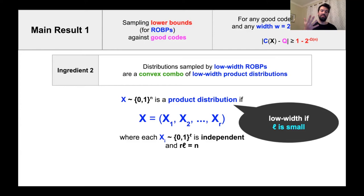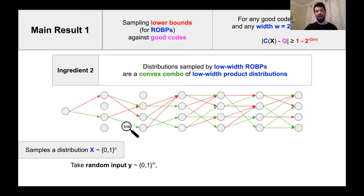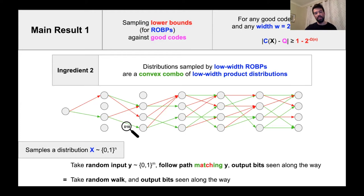Let's revisit what a low-width ROBP looks like and how it samples a distribution. It takes in a uniformly random bitstring Y and follows the path whose colors match the input bits. There's an alternative description: disregard input and colors, start at the designated star vertex, take a uniformly random walk along the branching program, and output the output bits seen along the way. This samples an exactly equivalent distribution and makes it easier to prove ingredient two.